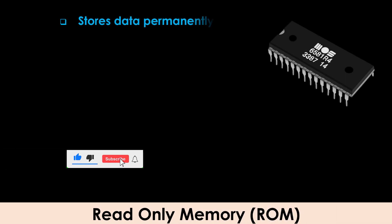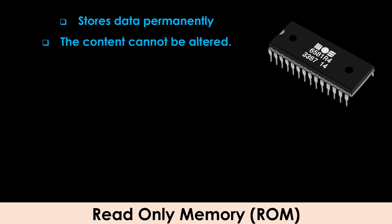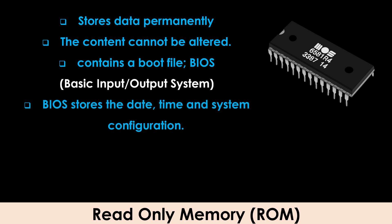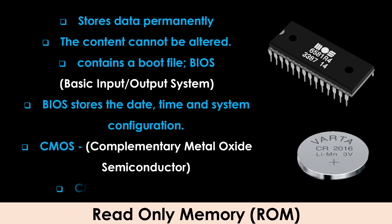ROM is used to store information that needs to be permanent. The contents cannot be altered — it can only be read from. ROM contains a boot file usually referred to as the BIOS, which stands for Basic Input and Output System. The BIOS stores the date, time, and system configuration in a non-volatile chip called a CMOS — in full form, Complementary Metal Oxide Semiconductor. CMOS is usually battery powered.